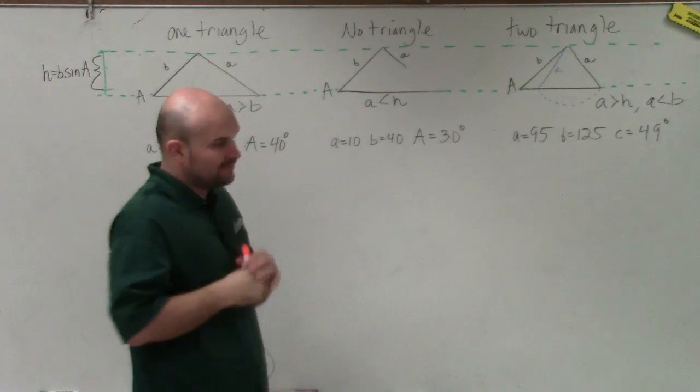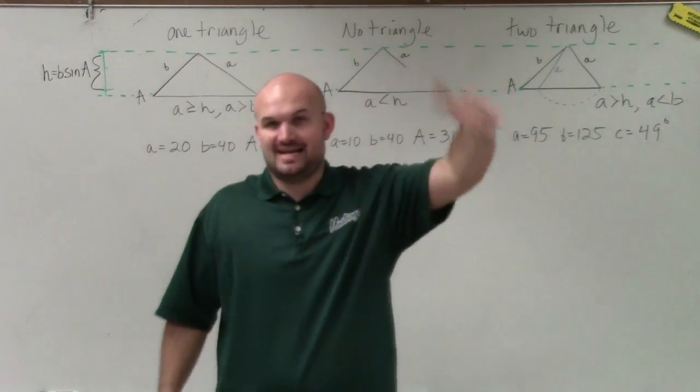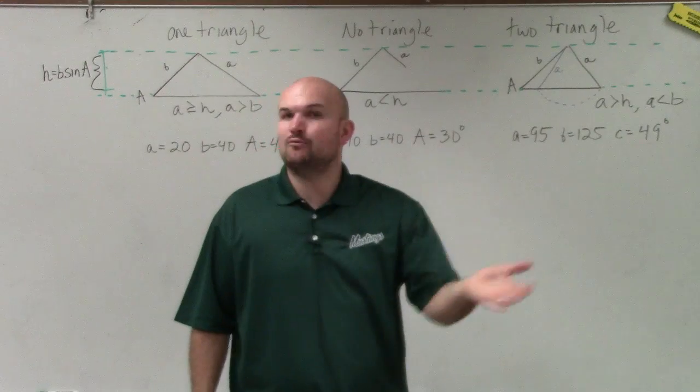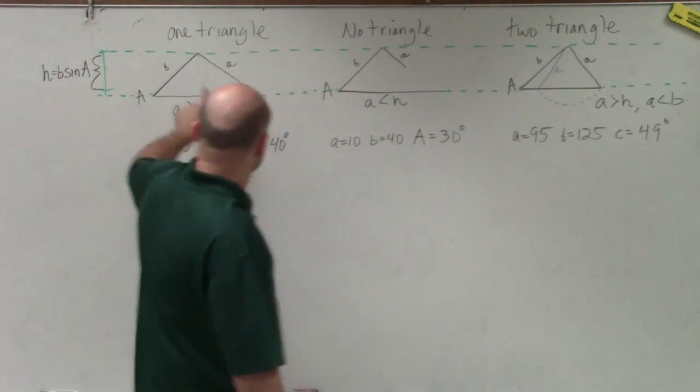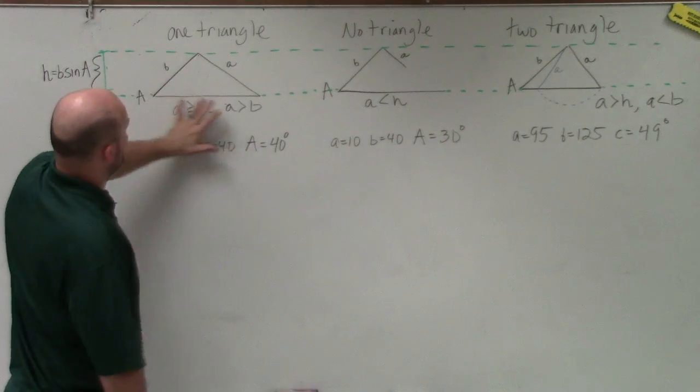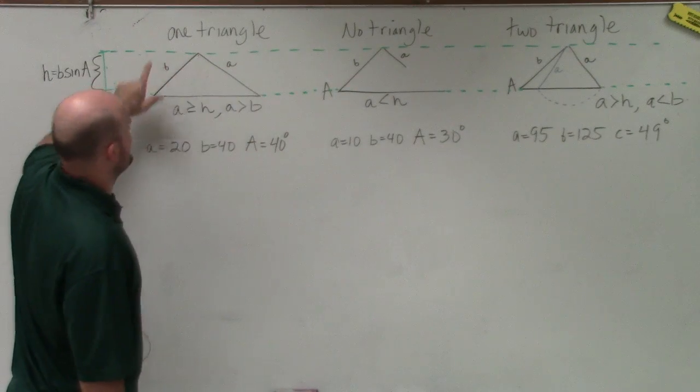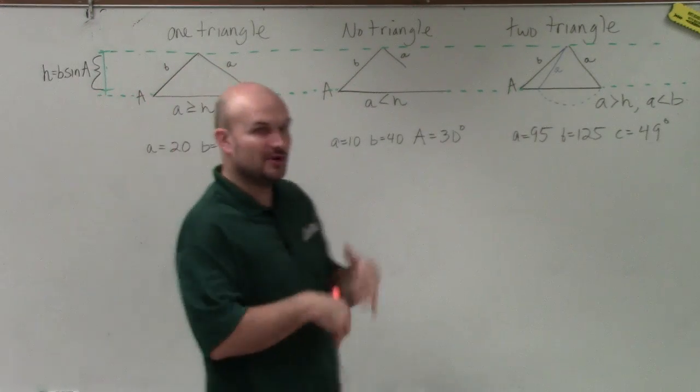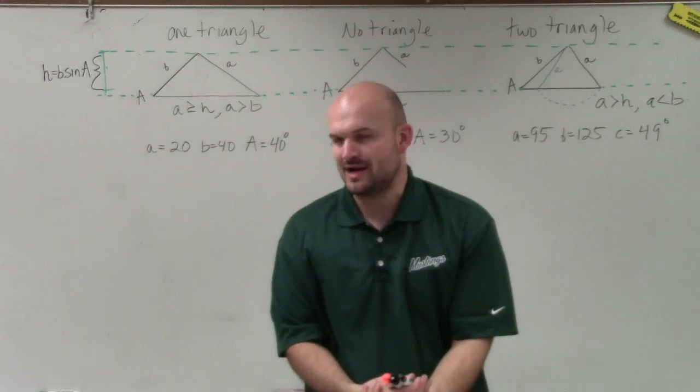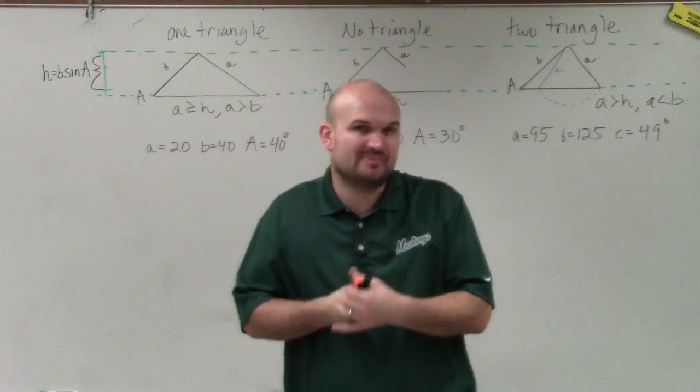Now, we have the ambiguous case whenever we have triangles that are going to be side-side-angle. That means we're given two sides and one angle in that kind of form. So you can see here, if we were going to be given values for this one triangle, we had a side-side-angle. So whenever you notice you have to solve for the missing parts of a triangle and you see side-side-angle, you know it's going to be your ambiguous case.